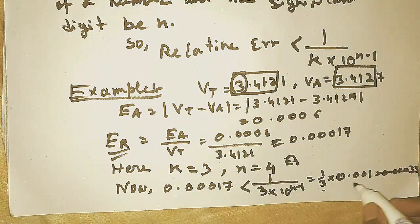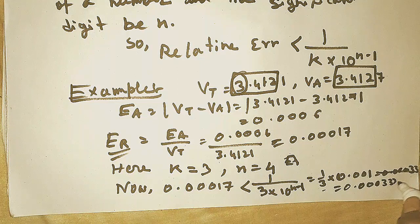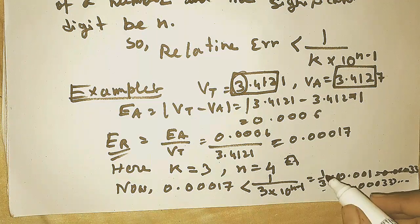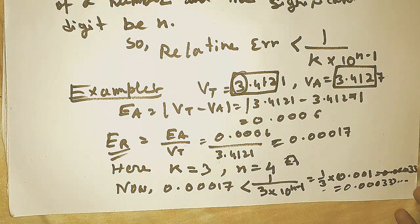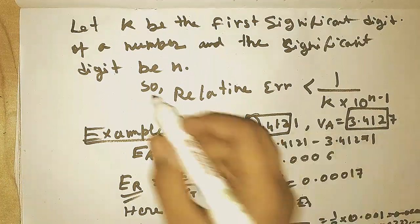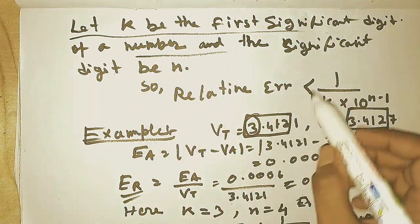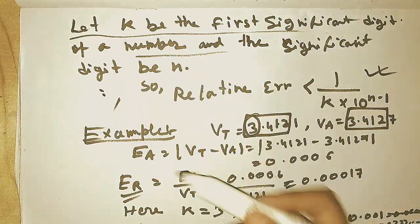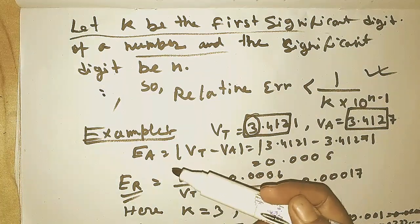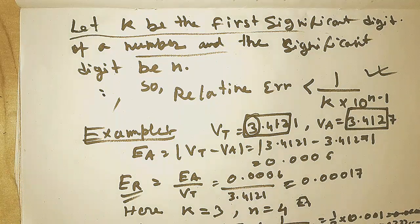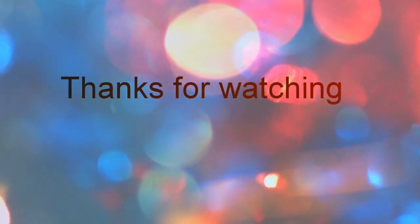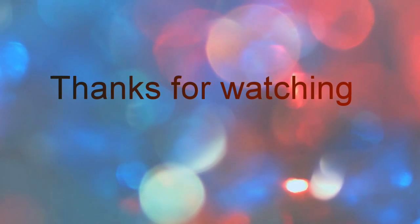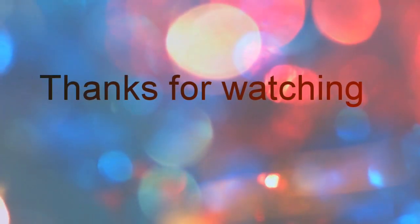So the theorem is confirmed: the relative error is really less than the term 1 divided by k times 10 to the power n minus 1. This theorem is very important and we will use it for many deductions. Hope this video will help you — please like, subscribe to our channel, stay with us, and share our videos.